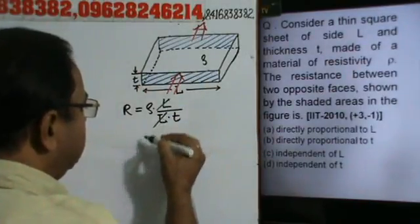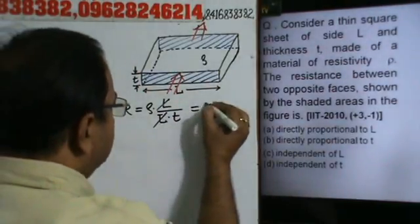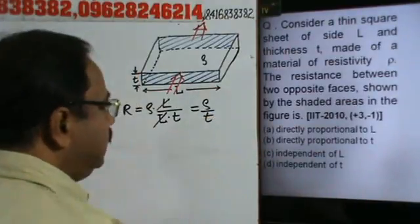Right? So, L over L cancels. Right? So, this will be rho by T.